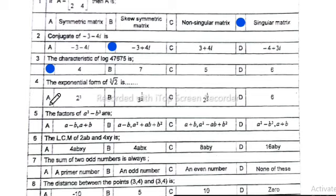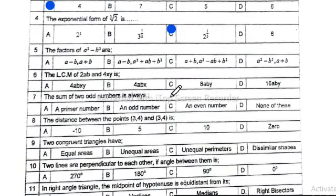Question 4: the exponential form of the cube root of 2 is equal to 2 to the power 1/3. Option C is correct. Question 5: the factors of a³ minus b³ are (a − b)(a² + ab + b²). Option B is correct.